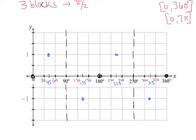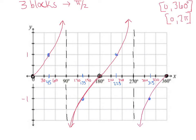The graph starts at the origin and exhibits concave-up curvature, curling up towards positive infinity approaching the asymptote at 90°. It's not a straight line — it curves. From 0° to 90° we're concave up; from 90° to 180° we're concave down; from 180° to 270° we're concave up; and from 270° to 360° we're concave down. That concavity pattern will help you a ton when ensuring the curve bends in the right direction.